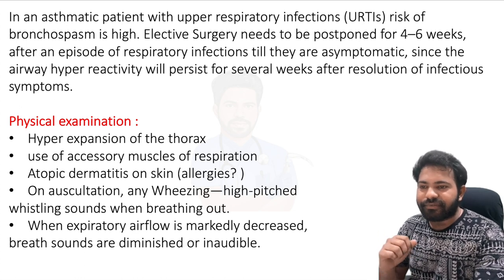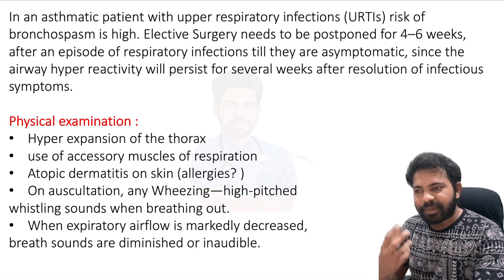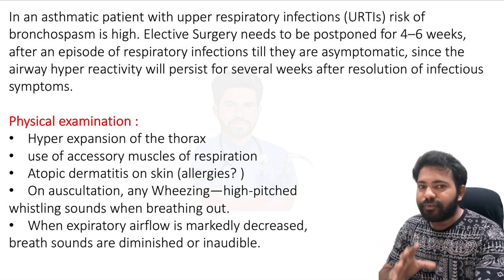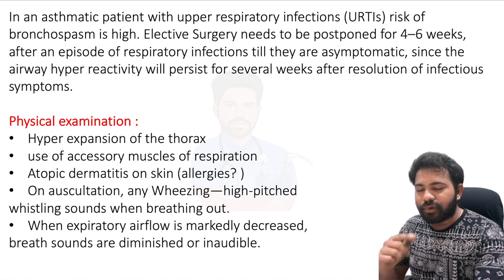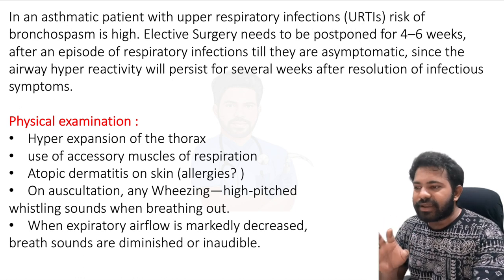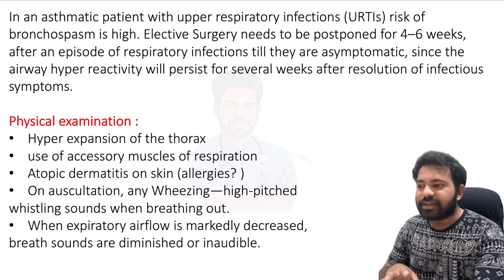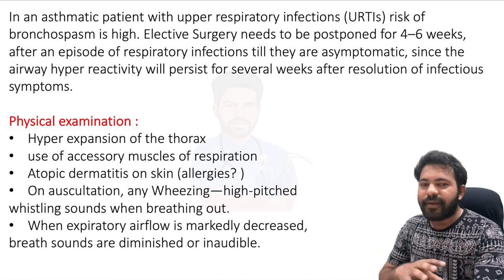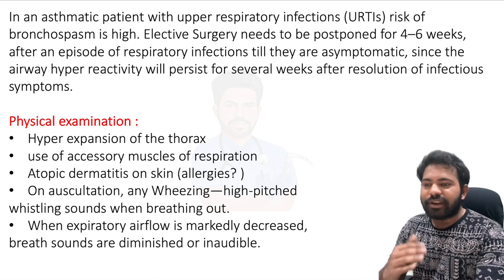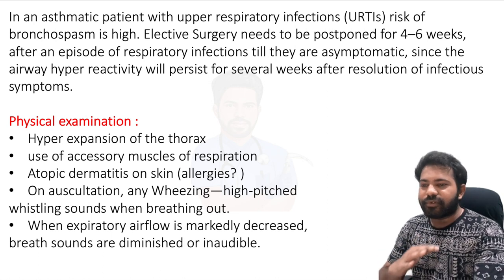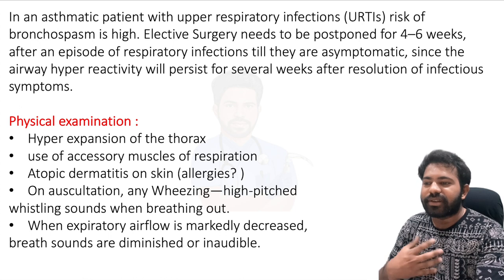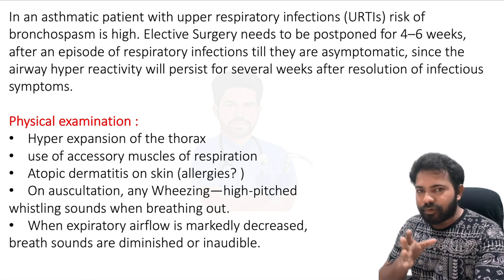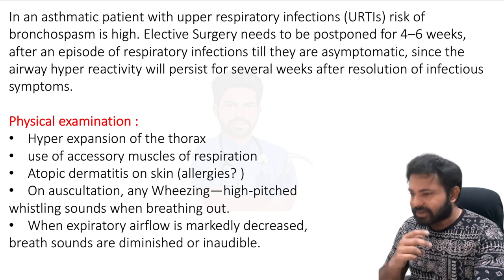In an asthmatic patient with upper respiratory tract infections, the risk of bronchospasm is very high. Elective surgery needs to be postponed four to six weeks after a respiratory infection, until the patient is asymptomatic, because airway hyper-reactivity will persist for several weeks even after resolution of infectious symptoms. The respiratory tract and mucociliary clearance need four to six weeks to return to normal.